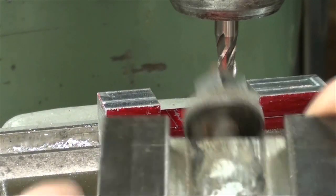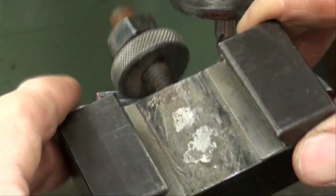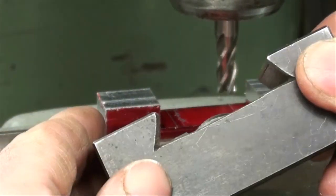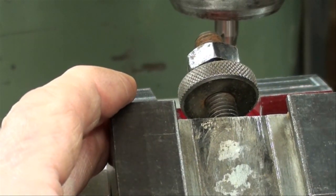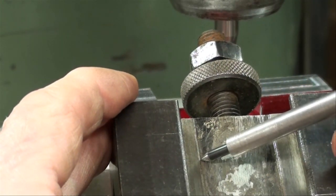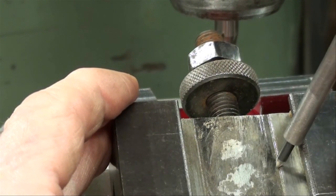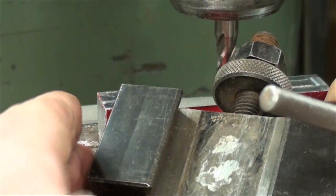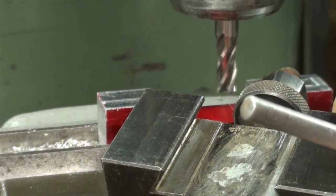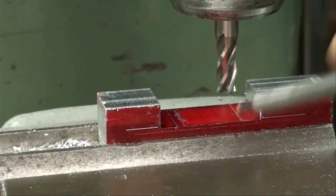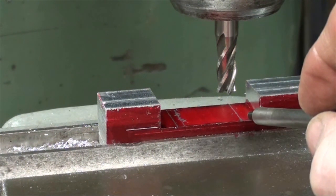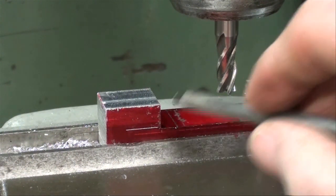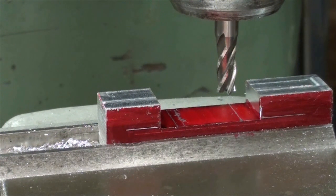Now this step is optional, but if you look at some commercially done dovetails, such as on this Aloris product, you're going to see they have supplied some relief right here. I'm going to do that—I like the appearance of it. I put some dye on here and a couple layout lines—they're just a quarter inch in from the ends. That dimension isn't very critical at all.